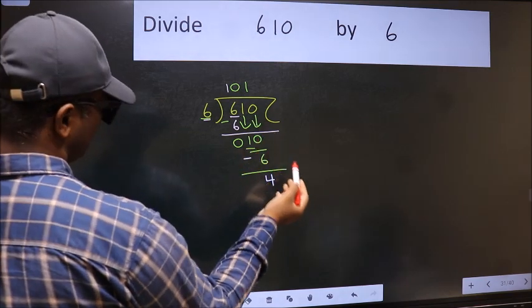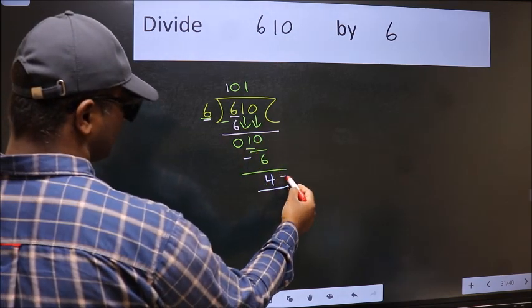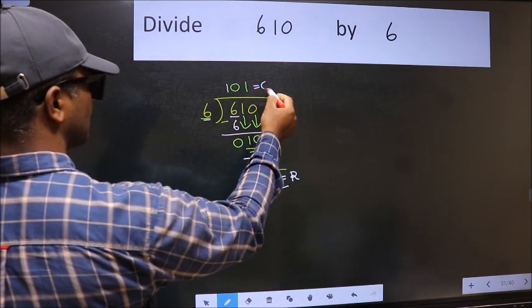No more numbers to bring down. So we stop here. This is our remainder and this is our quotient.